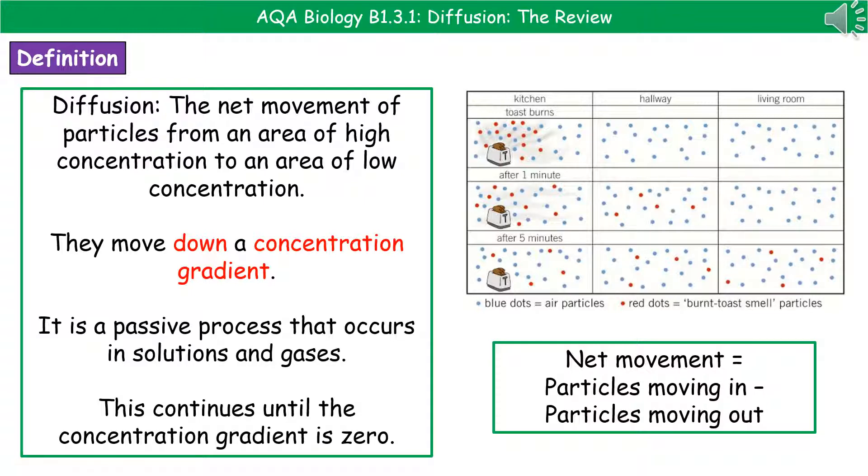Because of that, it's what's known as a passive process. So a passive process is one that's going to occur without needing any energy input. We find diffusion will happen in solutions and in gases, and it's going to continue until the concentration gradient is zero.